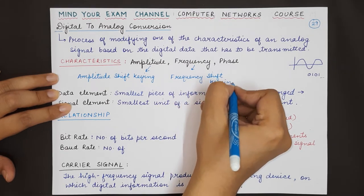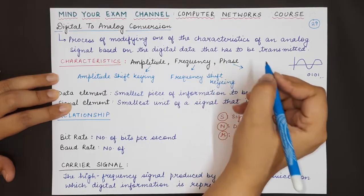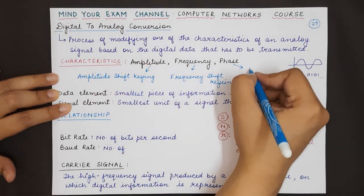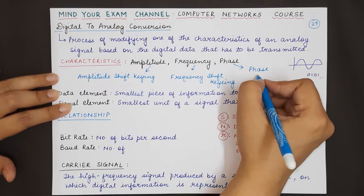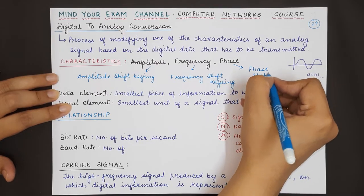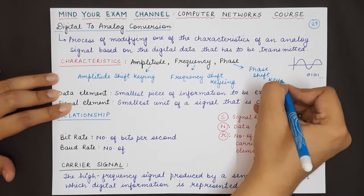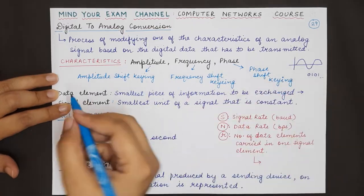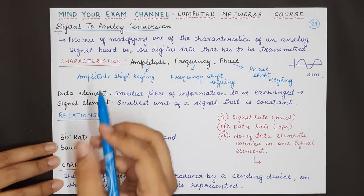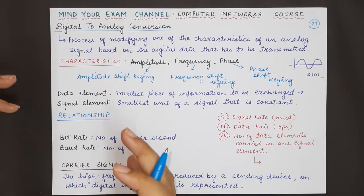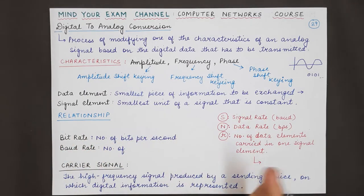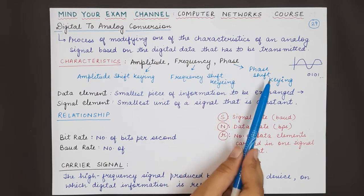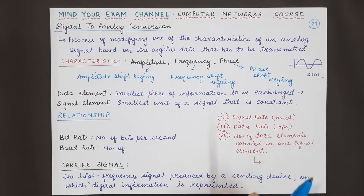Shift keying basically refers to the process of changing either the frequency, amplitude, or phase to represent digital information for data transmission. We need to study some important terms and formulas that will be used when you study each of these amplitude, frequency, and phase shift keying techniques in future lectures.